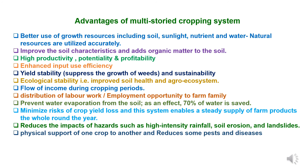Advantages of multi-storied cropping system: as there is a combination of various crops having different heights, different rooting patterns, different nutrient uptake criteria and yielding potential, there is better use of growth resources including soil, sunlight, nutrients and water, and natural resources are utilized accurately. There are chances of improvement of soil characteristics and addition of organic matter to the soil because of decomposition of plant material. There will be high productivity, profitability, and enhanced input use efficiency. Yield stability is achieved through suppression of weed growth, following sustainability principles by adopting various combinations of crops.